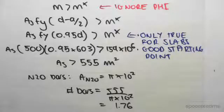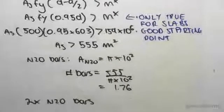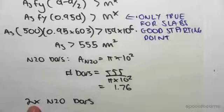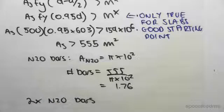Hey guys, I'm just continuing straight on from the previous video. We said a good place to start was using two N20 bars for minimum sagging.